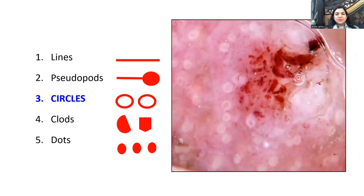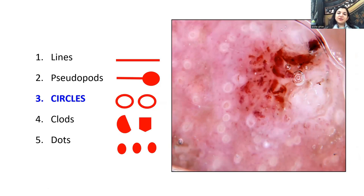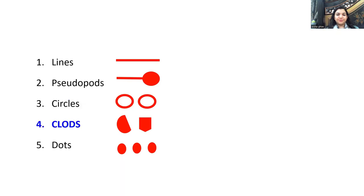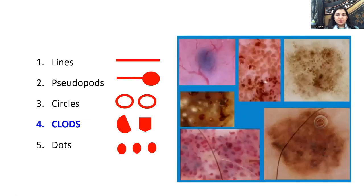The third structure is a circle — empty from inside. In this example, white circles are visible around the lesion, with ulceration and crusting in the center. The white circles — representing white keratin — along with ulceration, bleeding, crusting, and keratin, together make up the diagnosis of squamous cell carcinoma. White circles are the most specific dermoscopic sign of well-differentiated SCC.